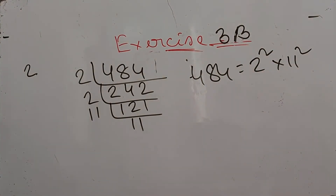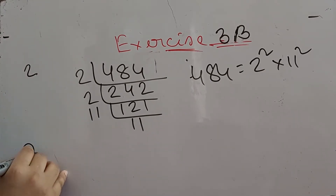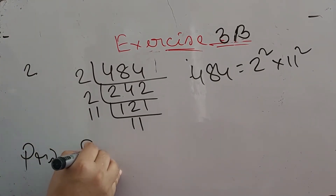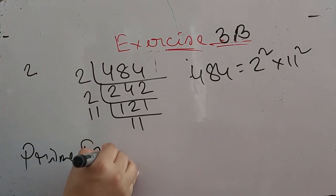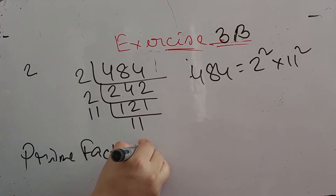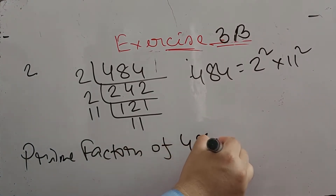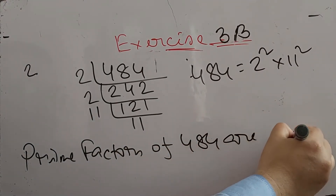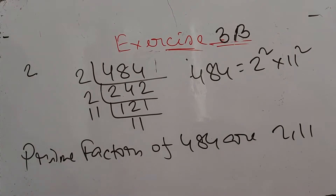So we can say the prime factors of 484 are 2 and 11.